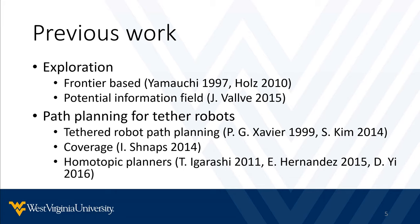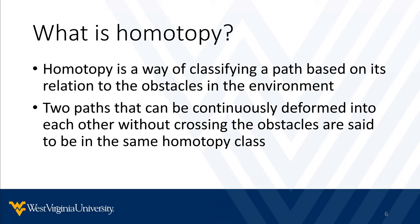One thing that is absolutely necessary for planners that account for the tether is homotopy, and there are some homotopic planners developed already. A brief explanation of what homotopy actually is: in a nutshell, homotopy is a way of classifying a path based on its relation to the obstacles in the environment around it. By definition, two paths are said to be homotopic to one another, or belong to the same homotopy class, if they can be continuously deformed into one another without crossing any of the obstacles. The way to define the homotopy class is using H-signatures.